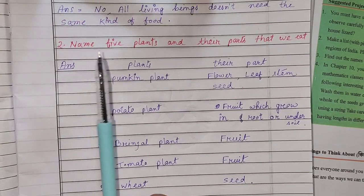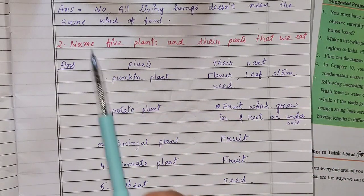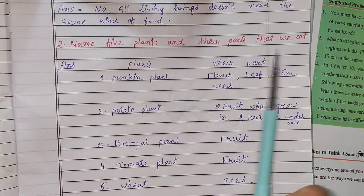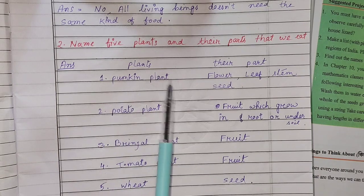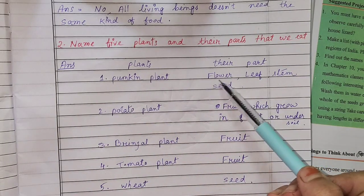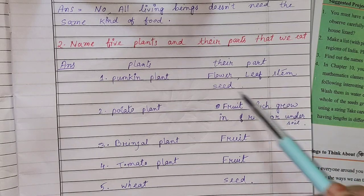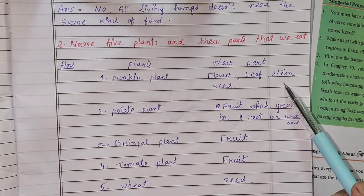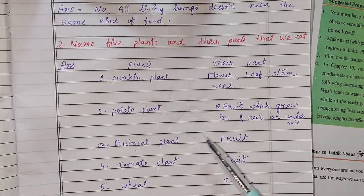Question Number 2: Name 5 plants and their parts that we eat. We have to write down the parts. The first one is the pumpkin plant — we eat the flower, stem, seed, and leaf.